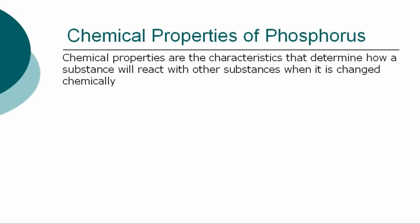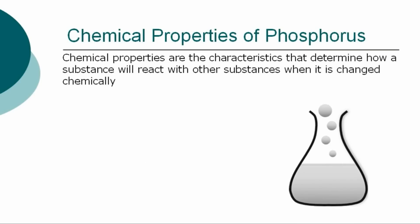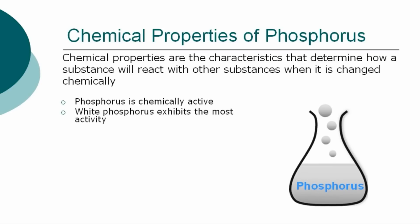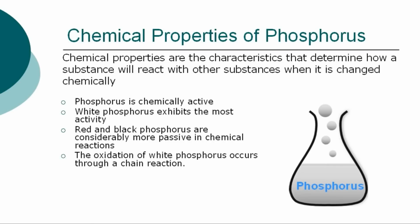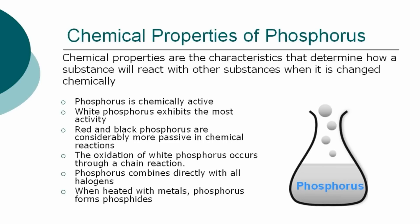The chemical properties are the characteristics that determine how Phosphorus will react with other substances when it is changed chemically. White Phosphorus exhibits the most activity. Red and Black Phosphorus are considered more passive in chemical reactions. The oxidation of White Phosphorus occurs through a chain reaction and is often accompanied by chemiluminescence — the emission of light during a chemical reaction that does not produce significant quantities of heat. Phosphorus combines directly with all halogens. When heated with metals, Phosphorus forms phosphides.